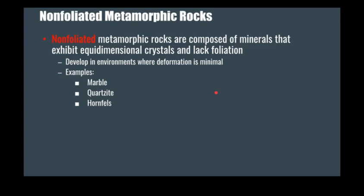The non-foliated rocks are a little more straightforward — they don't have as distinguishable different grades. Some examples are marble, quartzite, and hornfels. A lot of times these are organized because they lack visible foliation, and we organize them based on the minerals they contain.